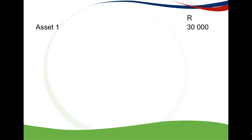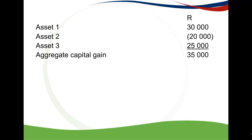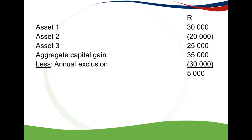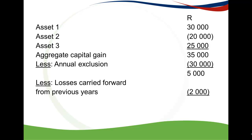Following the framework: first, add up all gains and losses together. Asset one had a gain of thirty thousand Rand, asset two had a loss of twenty thousand Rand, and asset three had a gain of twenty-five thousand Rand. This gives the aggregate capital gain. From that, deduct the annual exclusion to get to the net capital gain, then deduct the capital losses brought forward from the previous year of two thousand Rand, giving a final net capital gain of three thousand Rand.